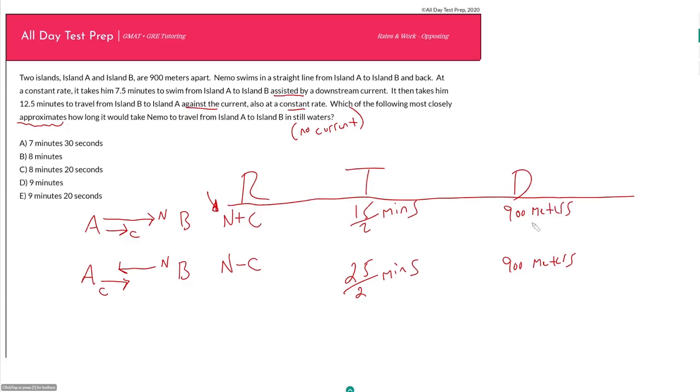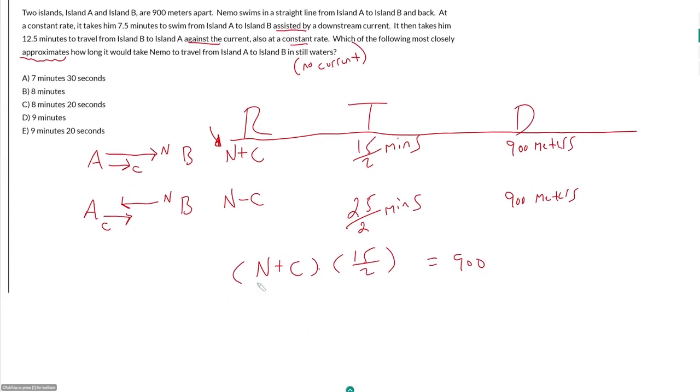Now if I want to make equations out of what I have, I know this times this equals this, so (N+C) times the time, 15 over 2, is equal to 900 meters. Then (N-C) times 25 over 2 is also equal to 900. If I want to get N and C by themselves, here I will multiply each side by 2 over 15.